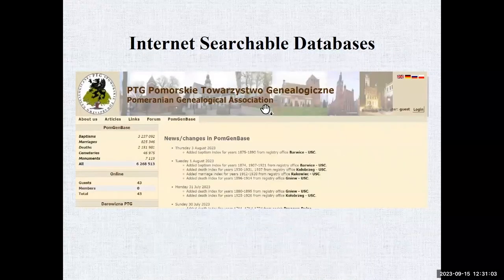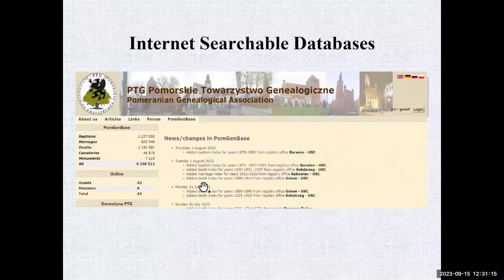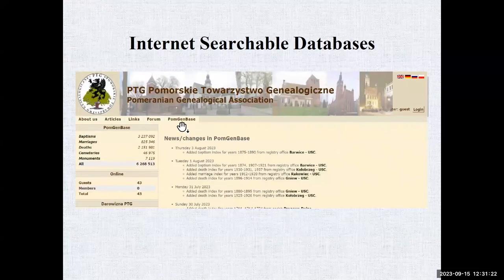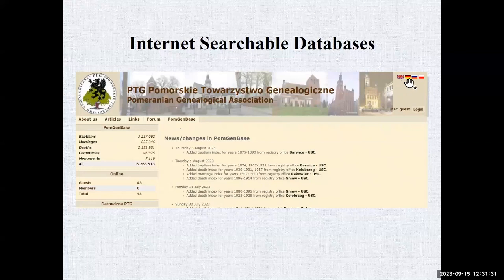The Pomeranian Genealogical Association database works similarly — over six million records. You go to their databases, search births, marriages, and deaths by name. You can switch between English, German, Russian, and Polish. You don't have to be a member to access it.